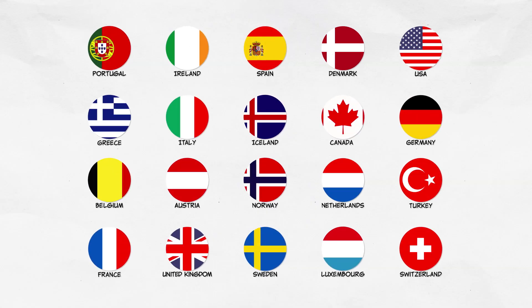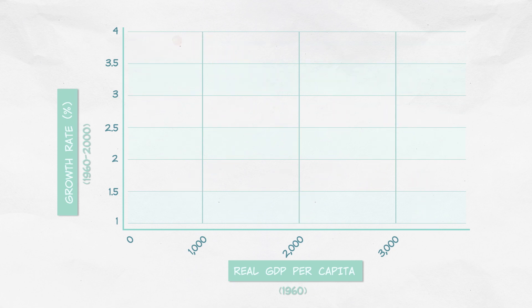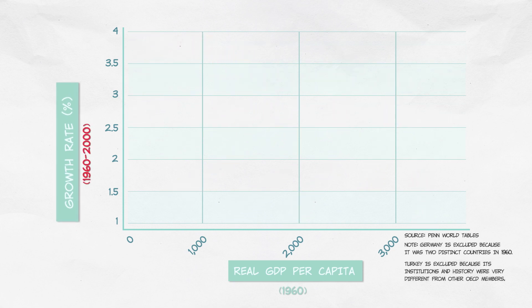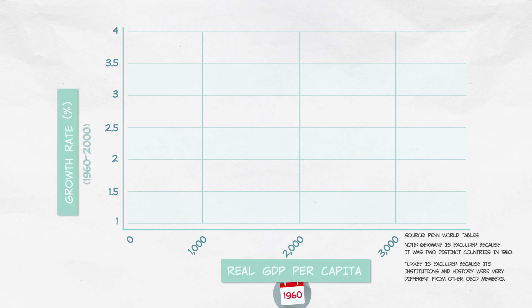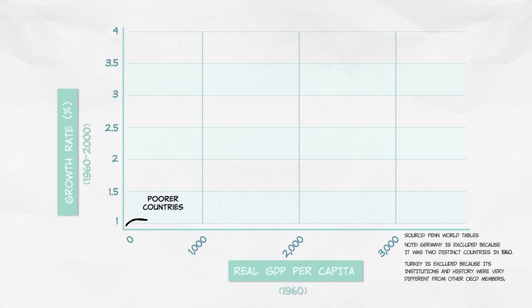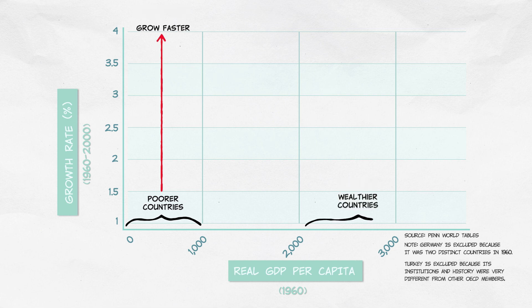Is it true? Let's take a look at the 20 founding members of the OECD — basically the Western developed economies. It seems reasonable to say that they've got similar institutions. Here we're going to plot the growth rate of these countries over 40 years on the vertical axis, and real GDP per capita in 1960 on the horizontal axis. Conditional convergence predicts that the countries which were poorer in 1960 should have grown faster over the next 40 years than the countries which were wealthier in 1960.